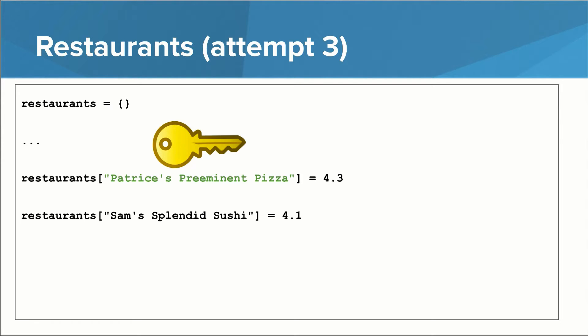With dictionaries, however, the thing that goes in square brackets can be an integer, a string, and a number of other things. It's called the key, and it can be used more or less like an index.